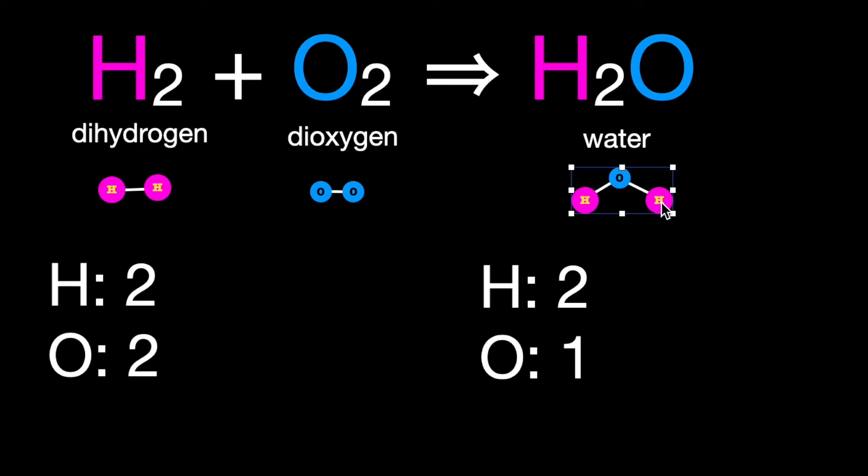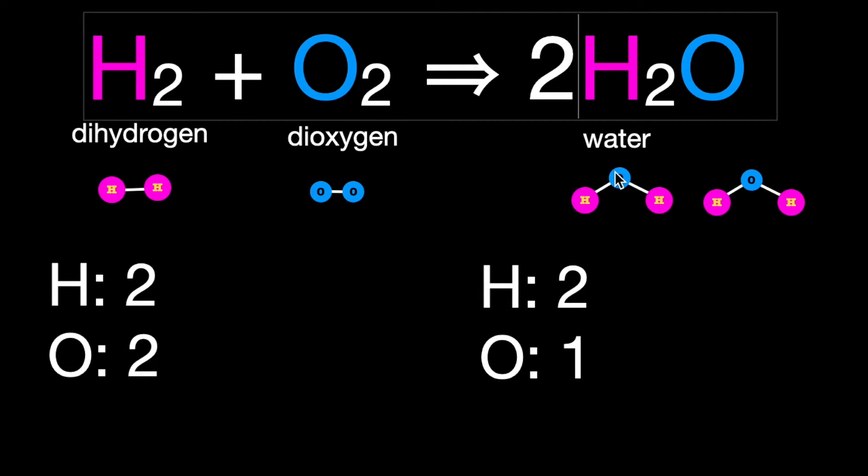Well, here's what we can do. Why don't we double the amount of water? So when we do that, we'll put the two up here because we're showing two molecules down here, and we need to recount. Now, our oxygens are balanced. See?